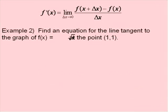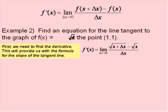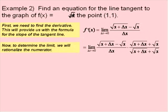For the next example, we are looking at finding the equation for the line tangent to the graph of f of x equals square root of x at the point (1, 1). Again we want to apply the limit definition of the derivative, which will provide us with the formula for the slope of the tangent line. The derivative is the slope of the tangent line.